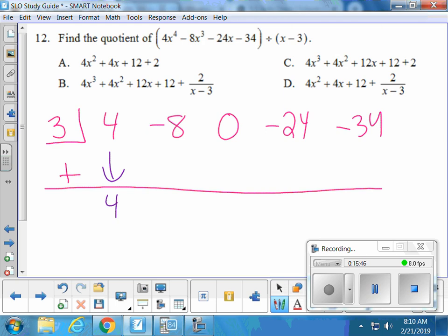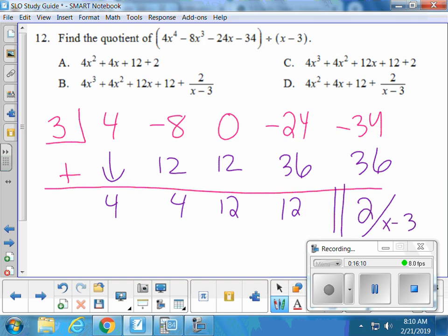So we drop our 4 down to start. Then 4 times 3, add straight down. 4 times 3 is 12, add straight down. 12 times 3 is 36, add straight down. 12 times 3 is 36, add straight down. So this is your remainder. They always put the remainder over the divisor. And this is the quotient. So the quotient is 4x cubed, 4x squared, 12x and 12. And then we'll put the 2 over x minus 3.